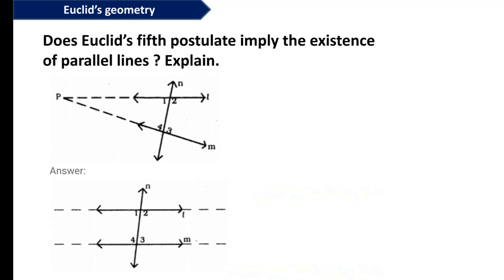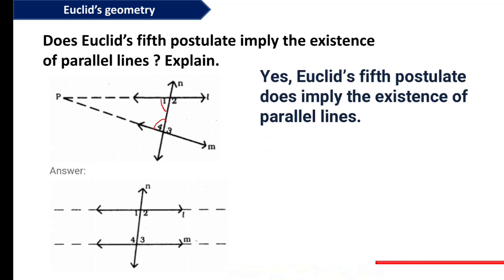The second question: does Euclid's Fifth Postulate imply the existence of parallel lines? What the Fifth Postulate says is: when one line intersects two other lines and the angles sum to less than 180 degrees, the lines will meet at some point. A parallel line, on the other hand, will never meet at any point.